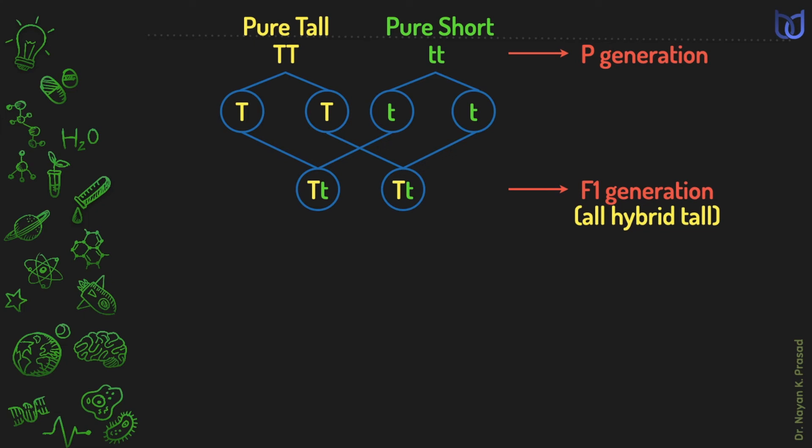This time again, gametes were formed and during gamete formation, the two factors were separated. Capital T, small t separated. Similarly, on another side, the capital T, small t separated. When the gametes of first filial generation unite, four different types of combinations may be produced.